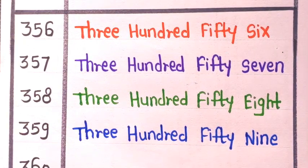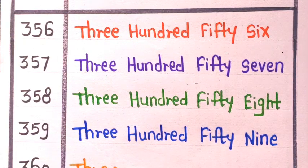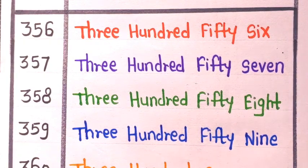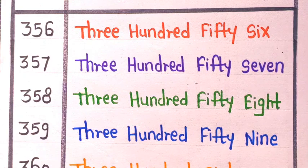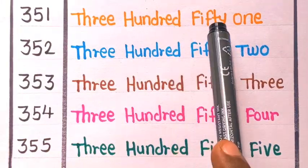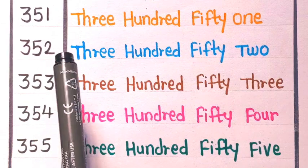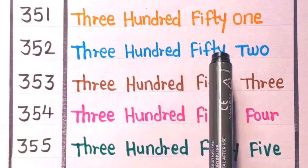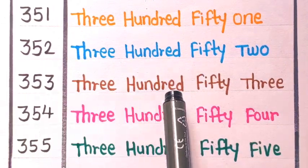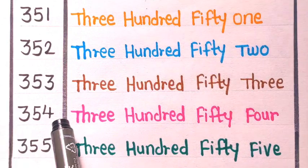And next is three sixty is three hundred sixty. Now let's revise with me: three fifty-one is three hundred fifty-one, three fifty-two is three hundred fifty-two, three fifty-three is three hundred fifty-three.